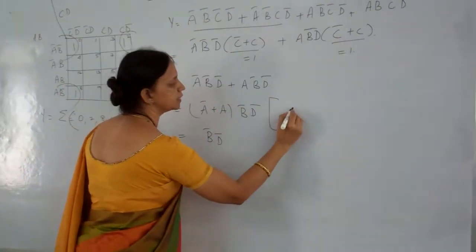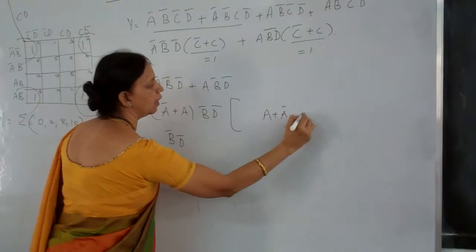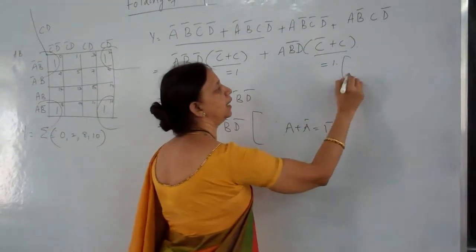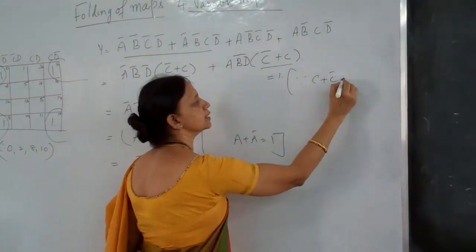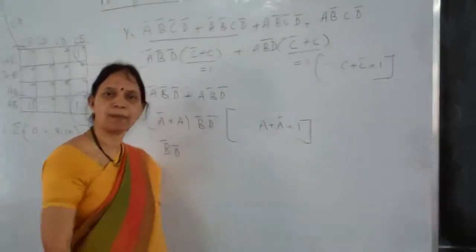It was always right since A plus A bar is 1. Here you write since C plus C bar is 1.